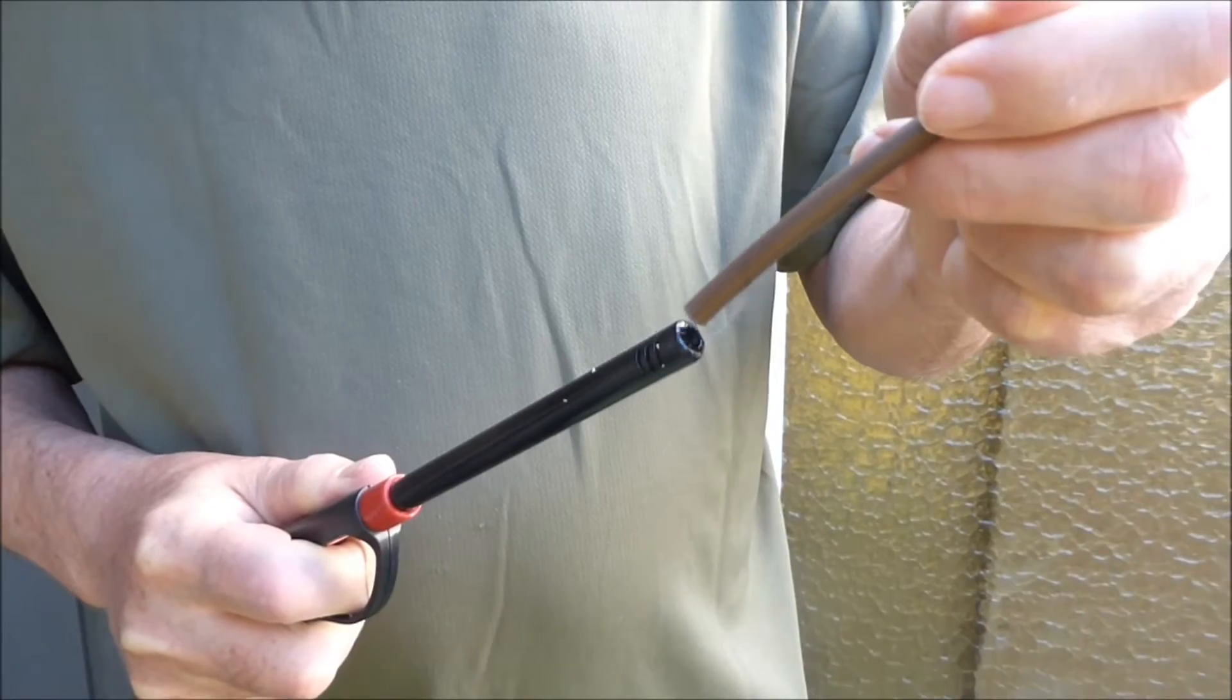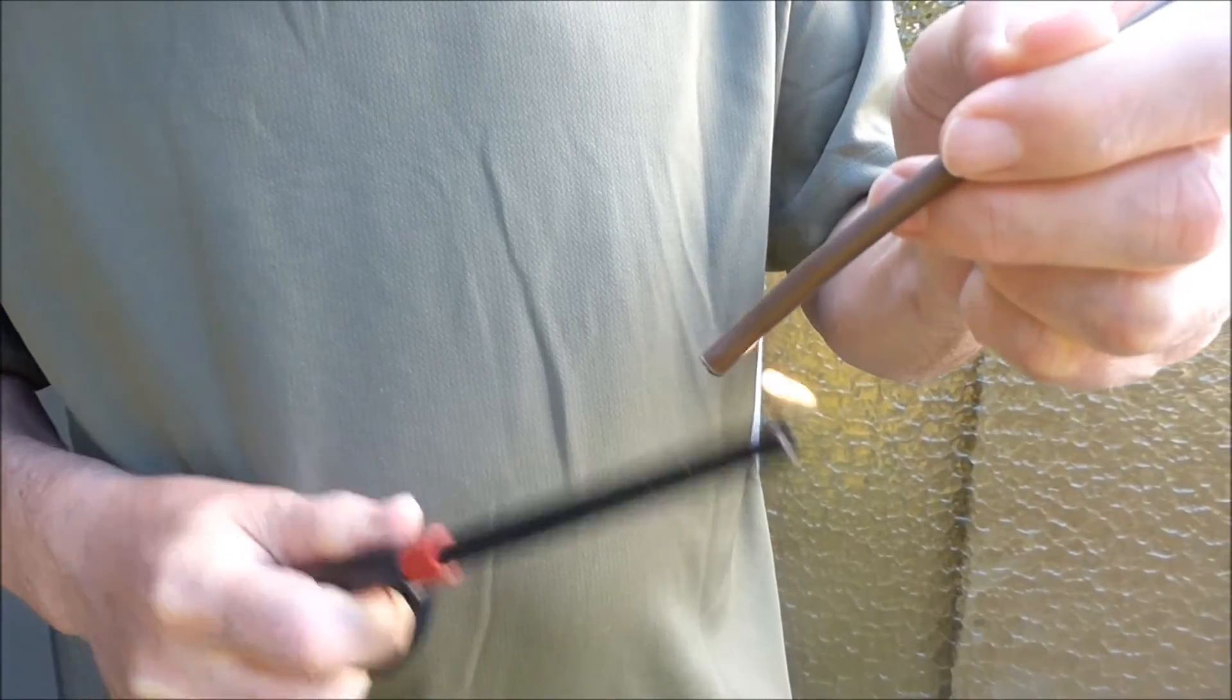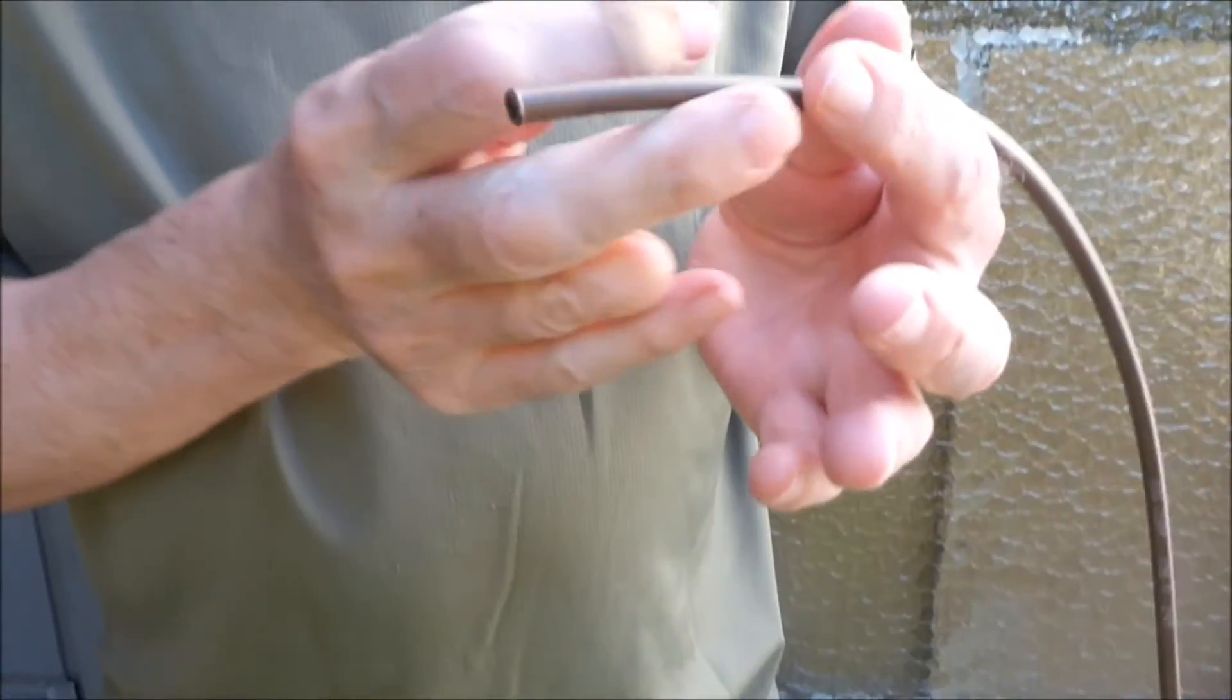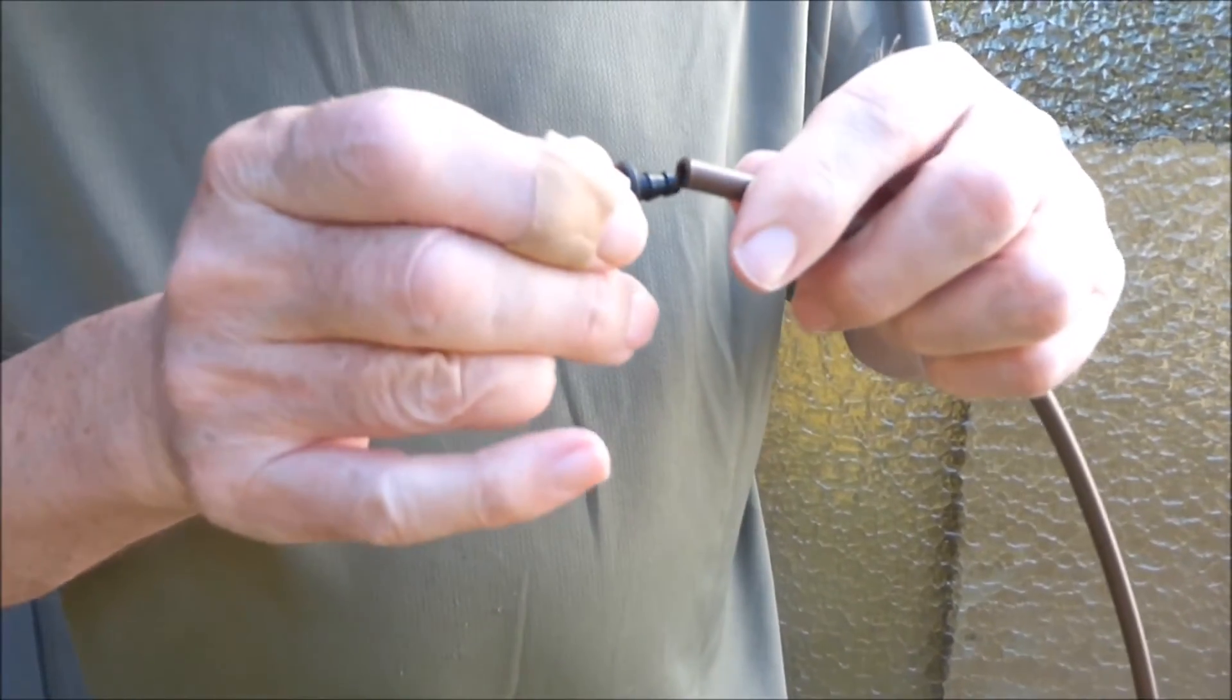A butane lighter softens the plastic and makes it easier to insert the plastic connector fitting into the tubing. Do not overheat or burn the plastic tubing.